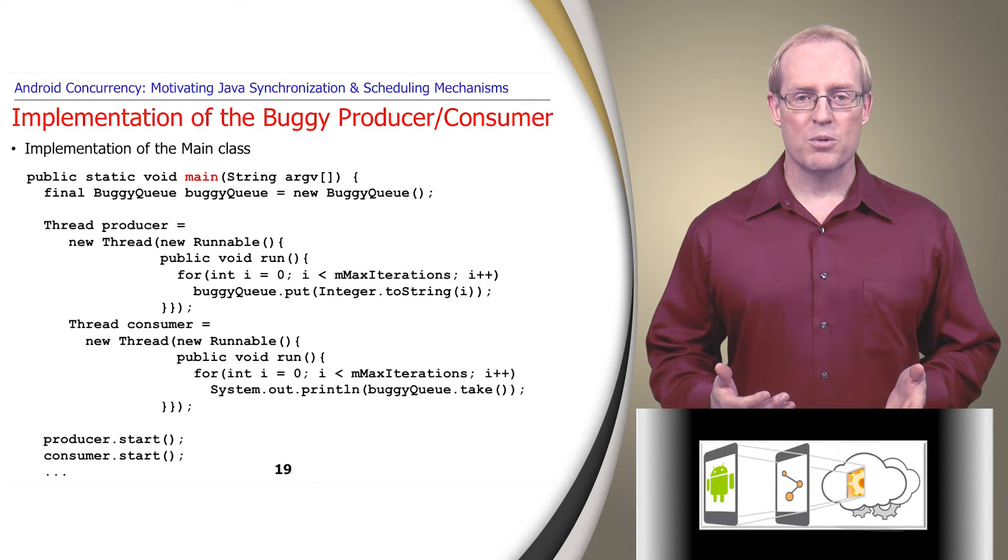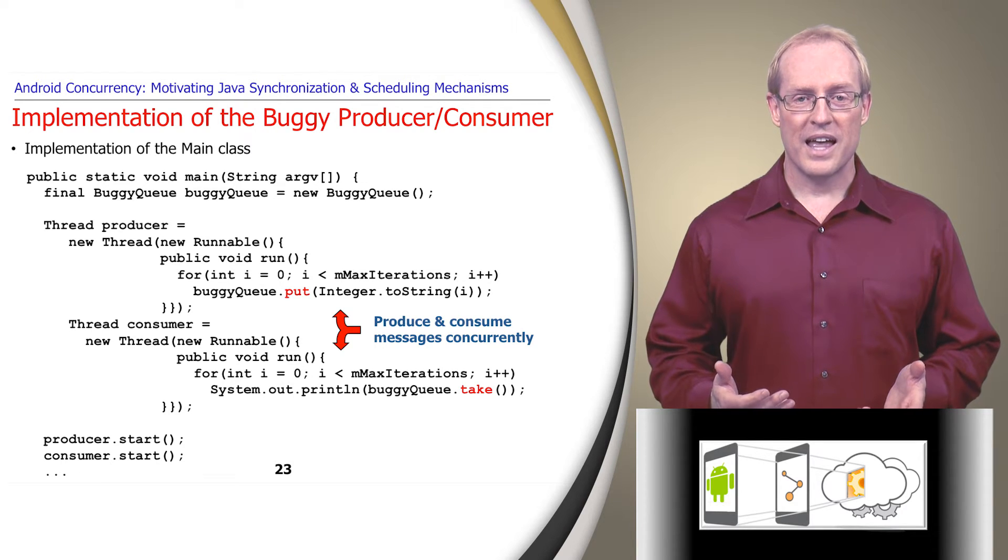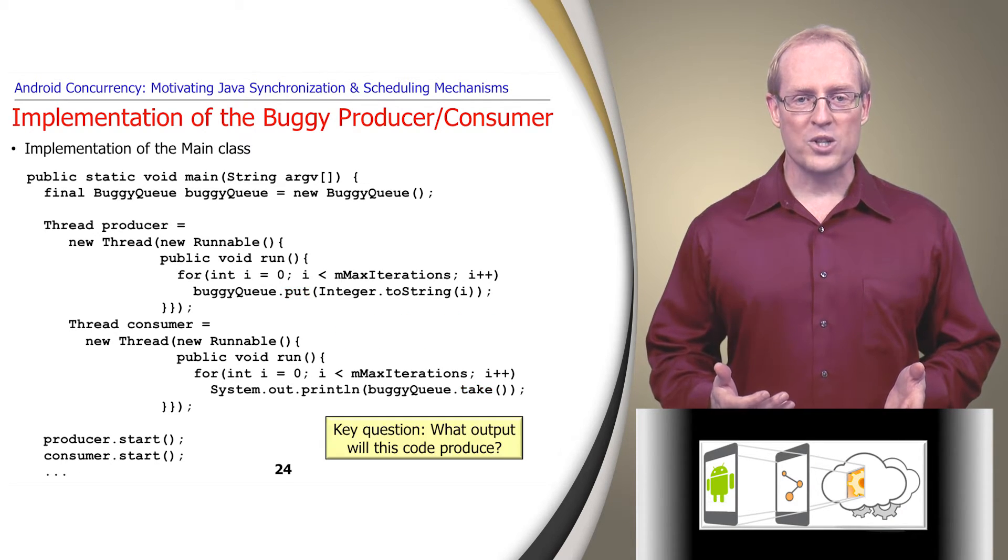The main entry point method of this program creates and starts two threads whose run hook methods call buggy queue's put and take methods to produce and consume string messages concurrently. So far, the implementation seems straightforward. However, the important question is what output will this code produce?